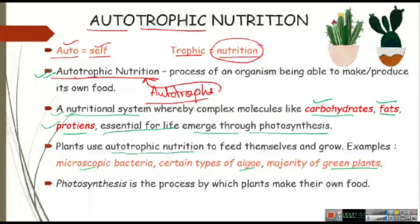Autotrophic nutrition is carried on with the help of photosynthesis. If plants don't make food, they won't be able to utilize it for their energy. Plants are also doing various kinds of activities, so they also need energy. For that energy, plants need food — and they get that food from photosynthesis, making it on their own. For autotrophic nutrition, photosynthesis is very necessary.